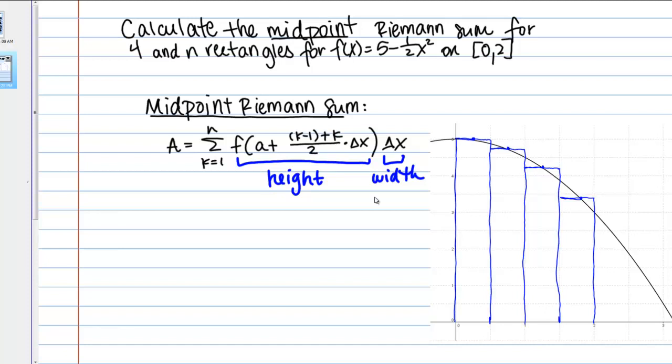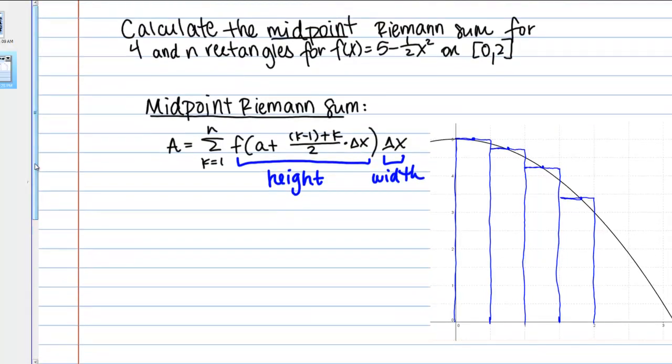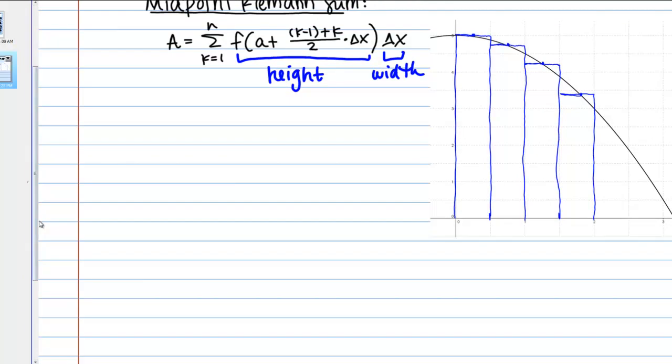We're going to do this for 4 rectangles and n rectangles. If you've been watching the other videos, we also did it for 400 rectangles in those. If you're interested in seeing that calculation, check out the videos on right endpoint and left endpoint Riemann sum if you want to see 400 rectangles. Anyway, let's start with 4 rectangles. I look at my formula here and let's think about what pieces of information we need to know. We need to know f(x), which is 5 minus 1/2 x squared. The interval again is from 0 to 2.